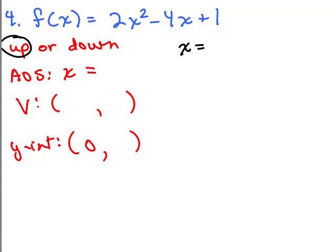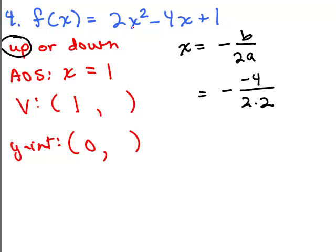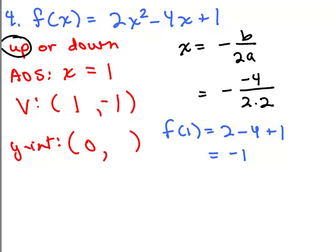X equals negative b over 2a. b is the coefficient of x, that's negative 4, over 2a, which is 2 times 2. Reducing that gives you 4 fourths, or 1. So the axis of symmetry is the line x equals 1. For the vertex point, you put in 1 for x: y equals 2 minus 4 plus 1, because when you put in 1 for x squared and x, it's just 1. So that's negative 1 — the vertex is (1, negative 1). For the y-intercept, put in 0 for x, and you get the constant term, so (0, 1) is your y-intercept.